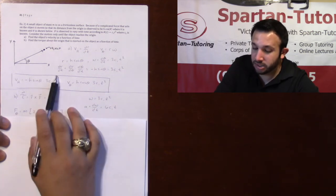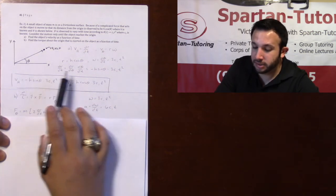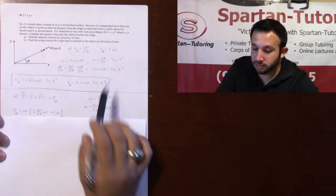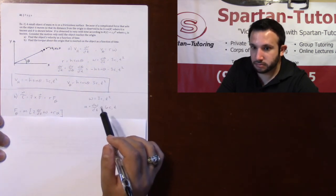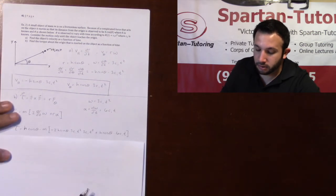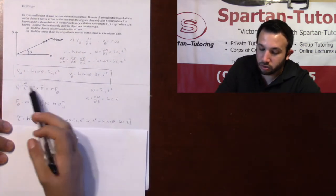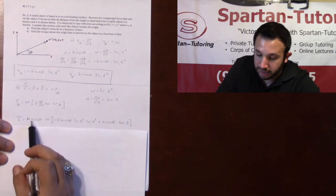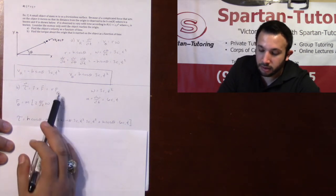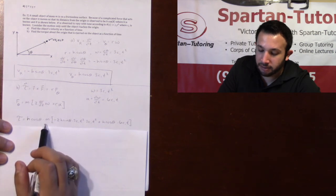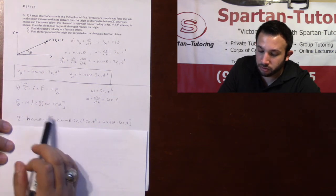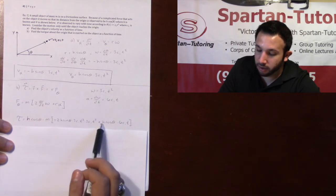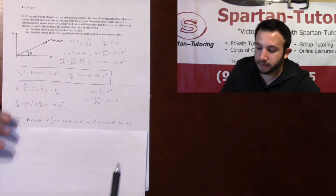And then as for the dr/dt, we have that as well. Your dr/dt is negative h sine theta times the 3c₁t². So you just plug and chug. Your torque is r times f theta. So your r is h cosine theta. Your f theta is m times your 2 dr/dt times your omega plus my r times alpha. And then after that, I just multiplied it together and combined like terms.